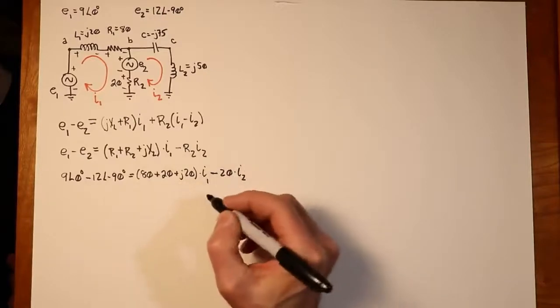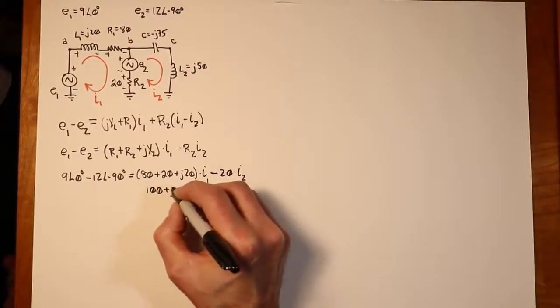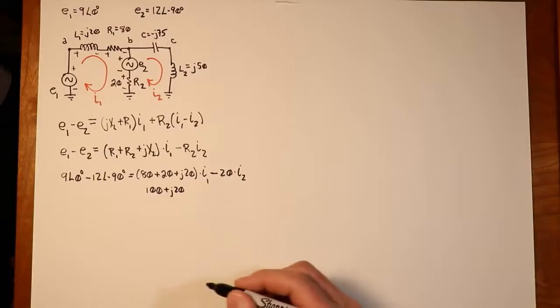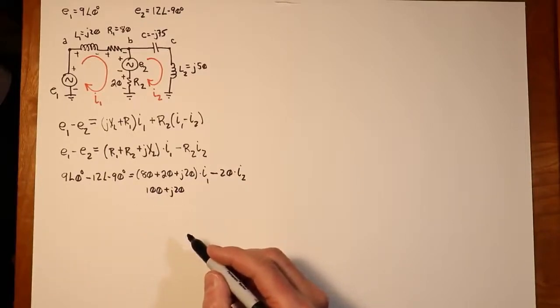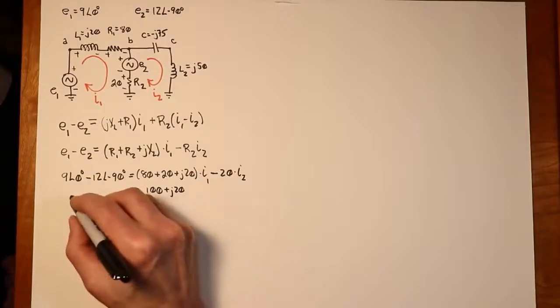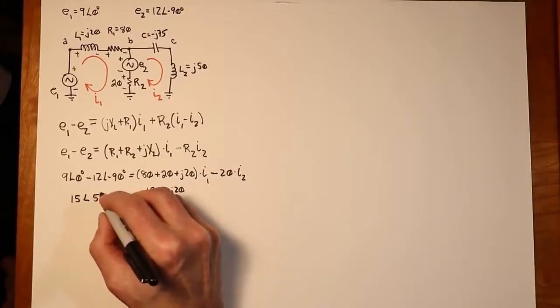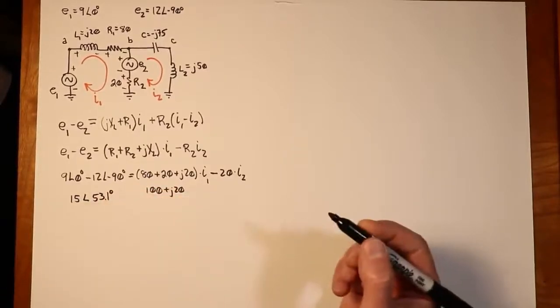So that's essentially our first equation. We just need to simplify things just a little bit. 80 plus 20 plus J20. This piece will turn into 100 plus J20. And if we combine the 9 at 0 and the 12 at a negative 90, we subtract those, we'll wind up with a combined value of 15 at an angle of 53.1. So that's basically our first equation. We're good there.